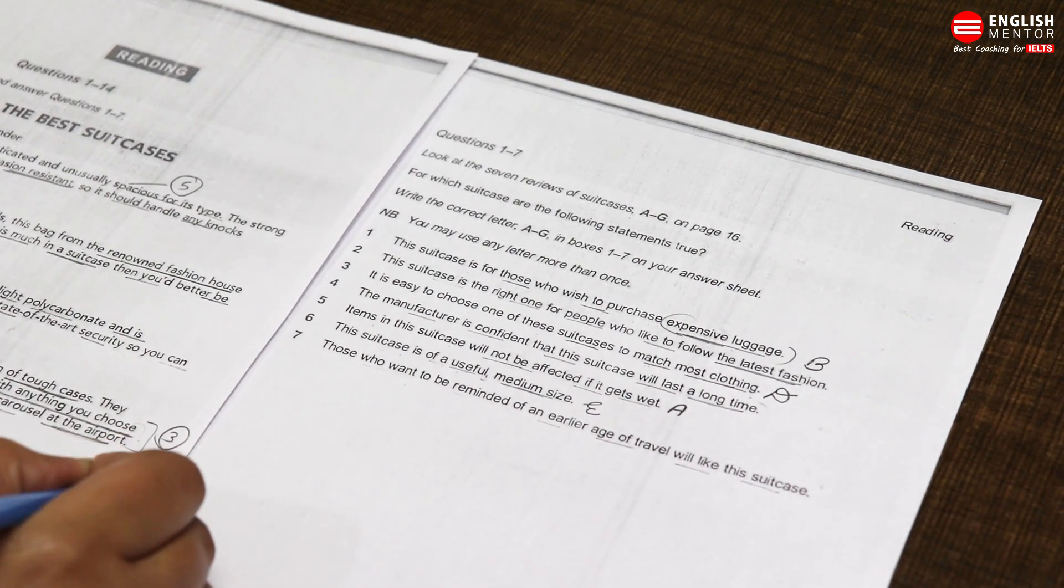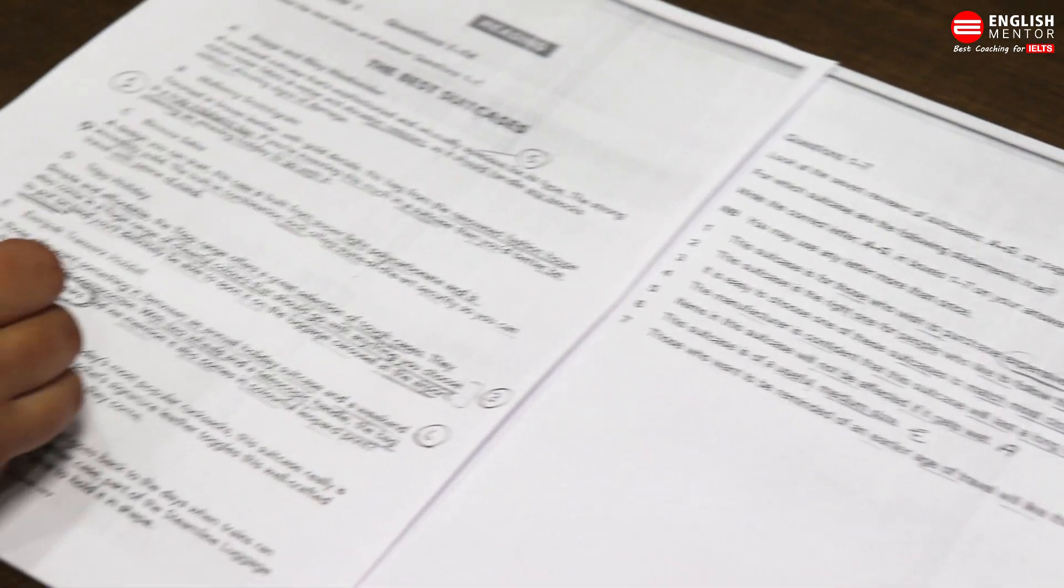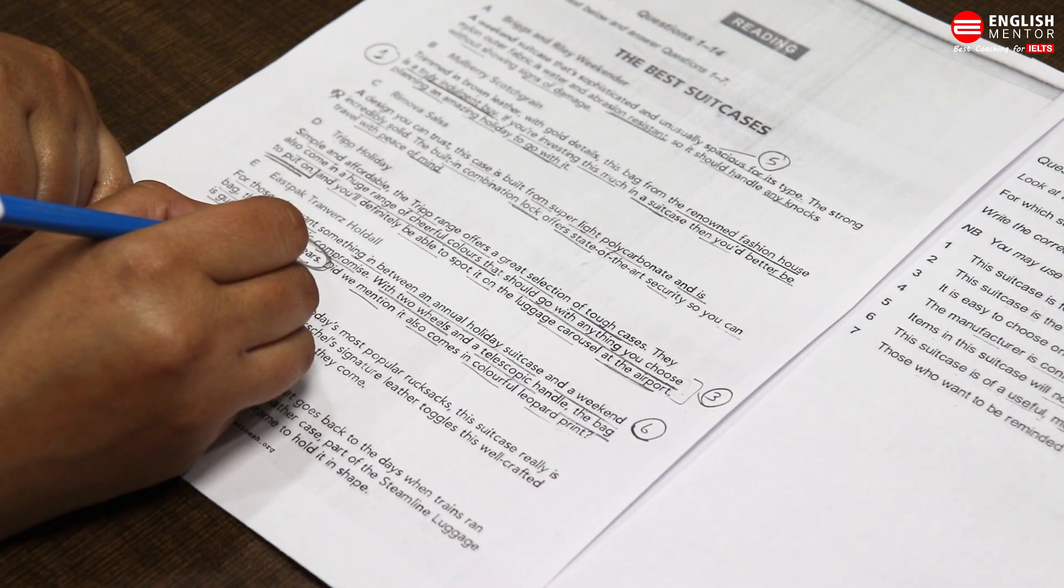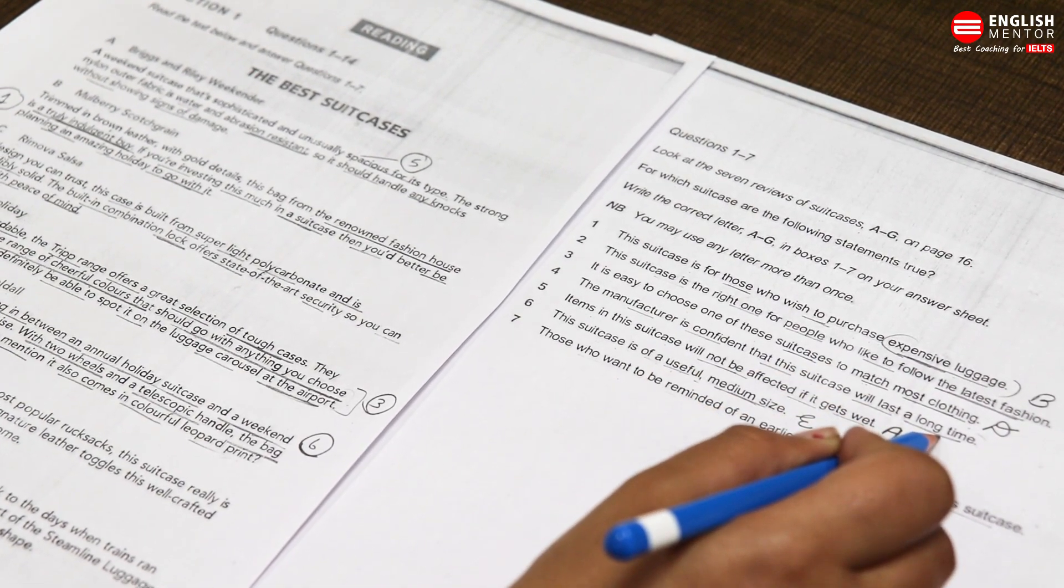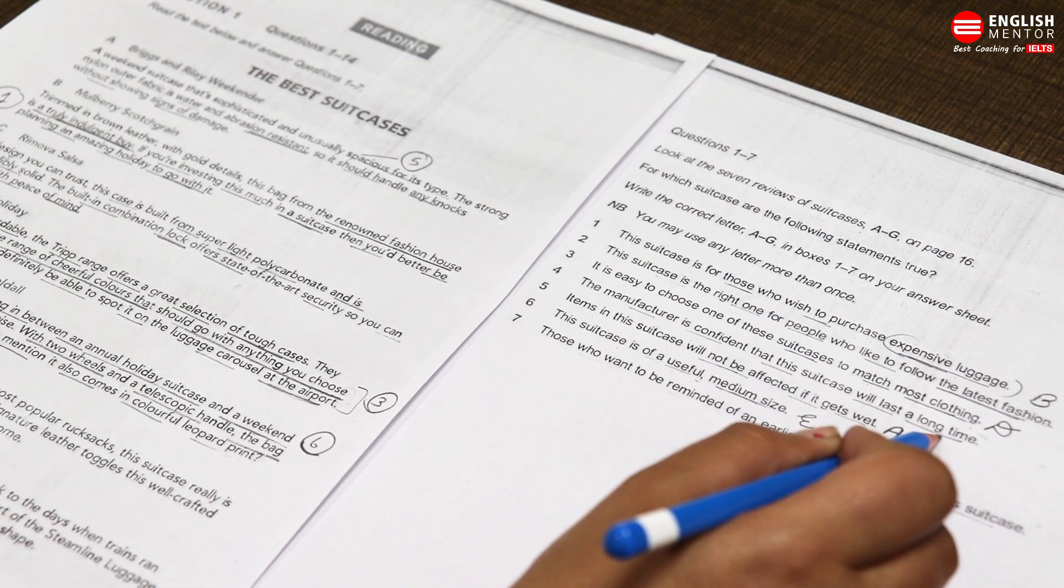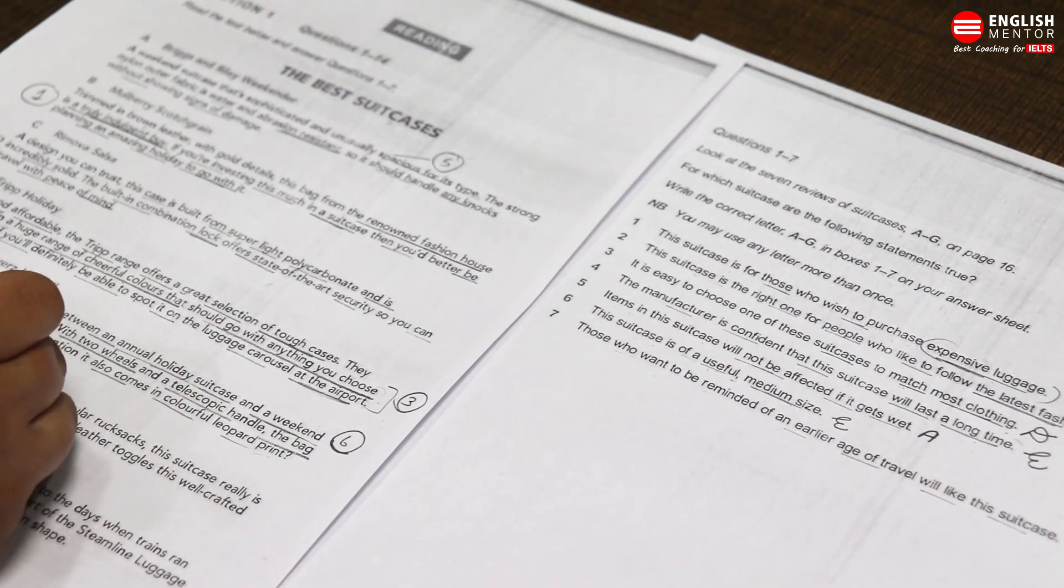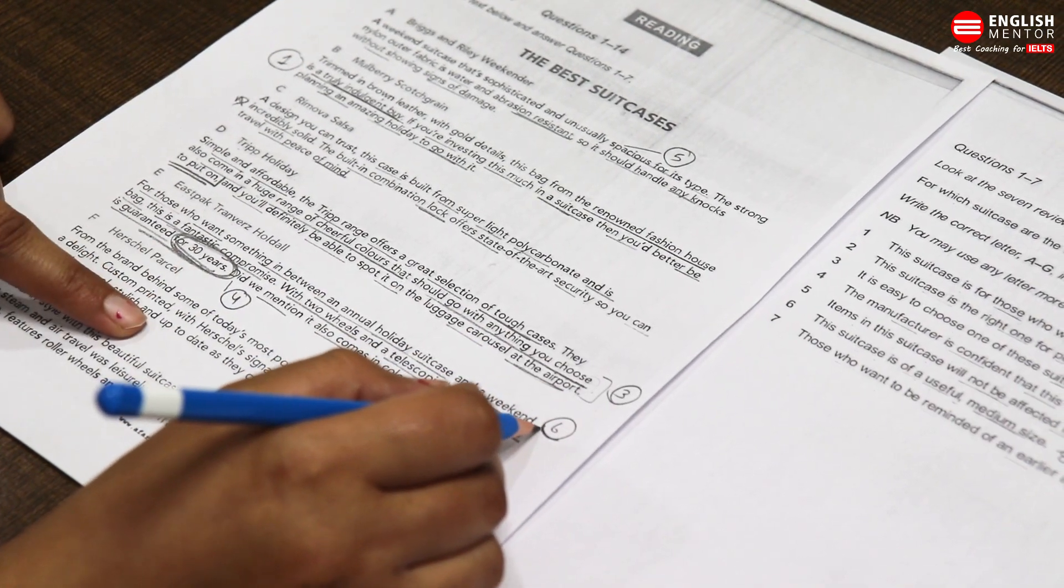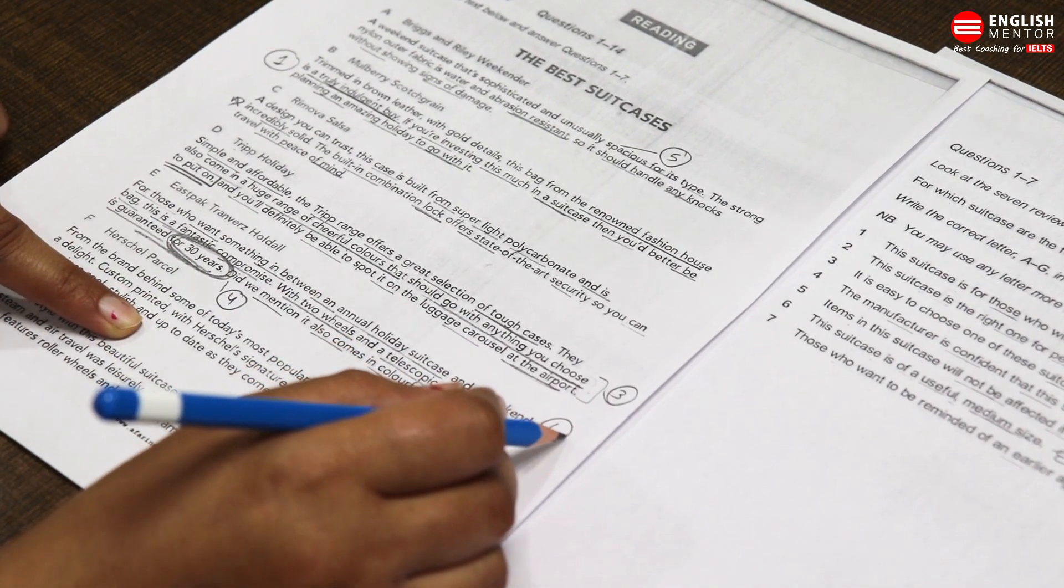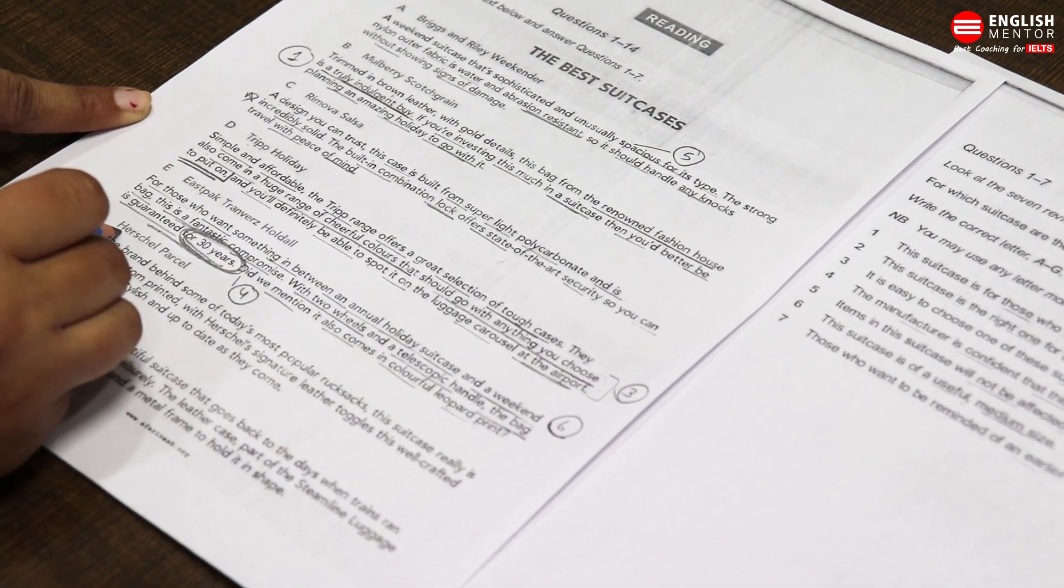Yahaan se humara six question solve hua hai. Iske saath ek aur bhi hua hai. If you remember ki guarantee ki baat ho rahi hai, 30 years ki baat ho rahi hai. Aur fourth question mein unhone baat ki hai: the manufacturer is confident that the suitcase will last a long time. Kyunki 30 years ki guarantee is given here, therefore the answer is E. So yahaan se humara fourth question bhi solve ho gaya. RUP method ka again aap benefit dekh sakte hain ki by reading only three lines, we will be able to solve our two questions. Hamare do questions solve ho gaye hain yahaan se.